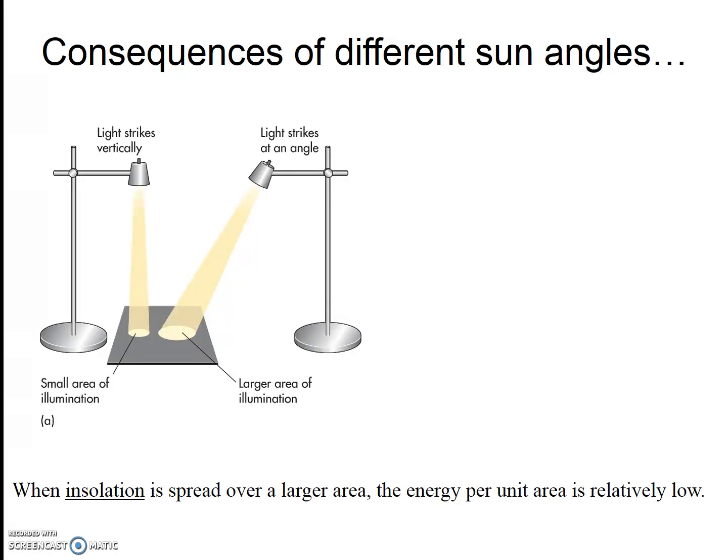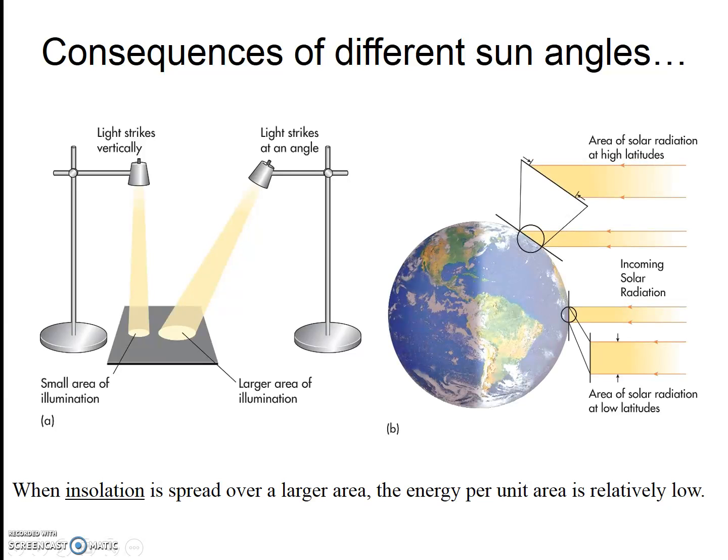This diagram shows us an analogy of a light hitting a surface. If the light comes in directly, it only covers a small area. But if that same amount of energy comes in at a lower angle, it covers a larger area, but the light will be more diffuse, less intense. Consider stopping the video just to take this in and make sure you've mastered this concept.